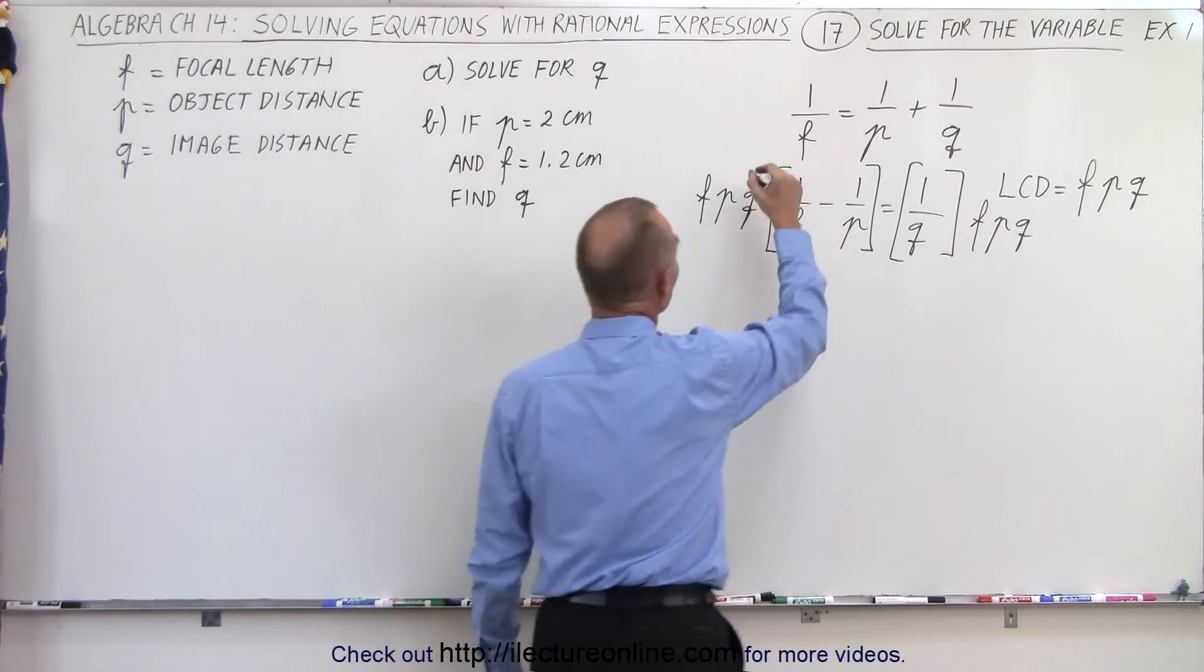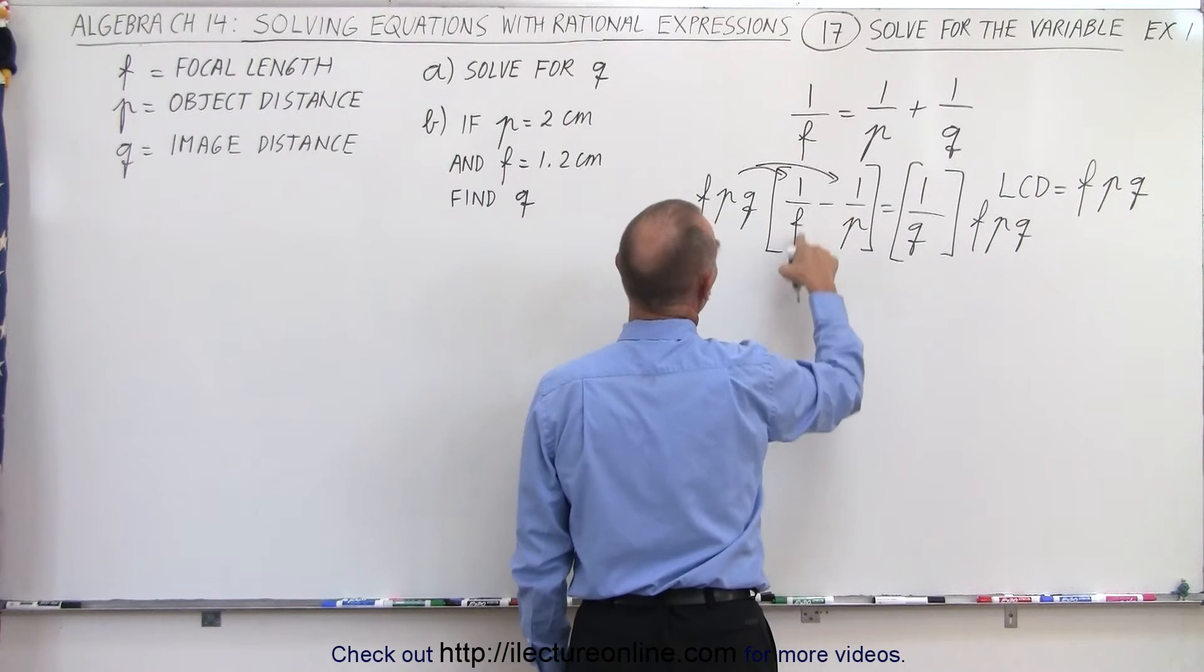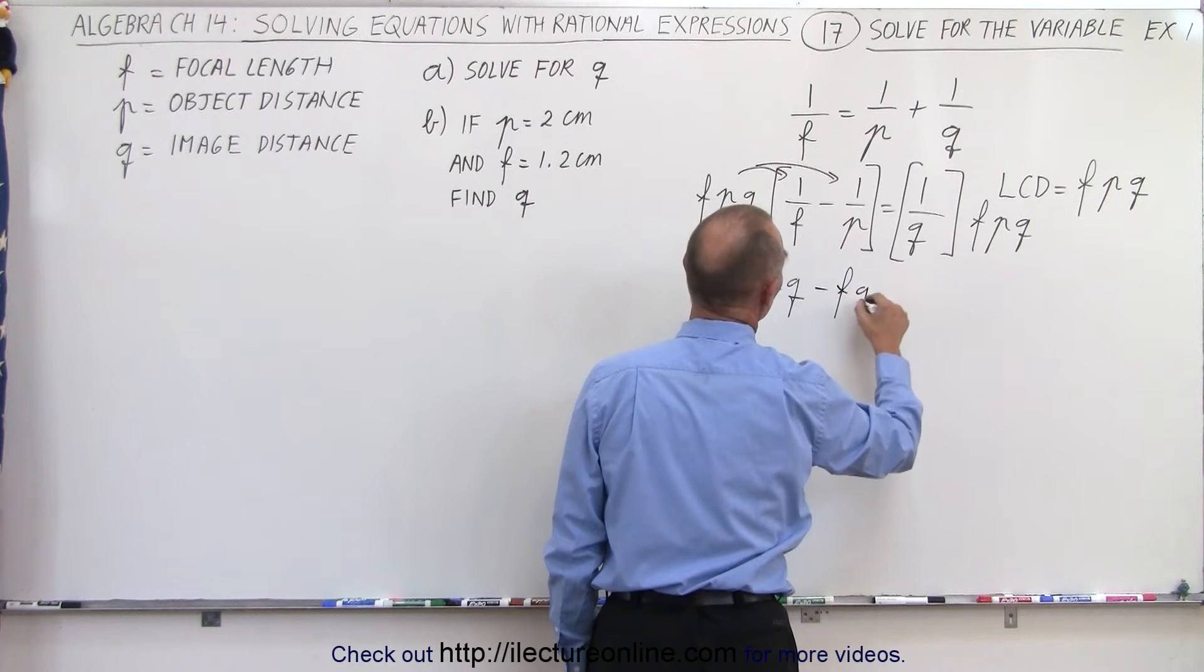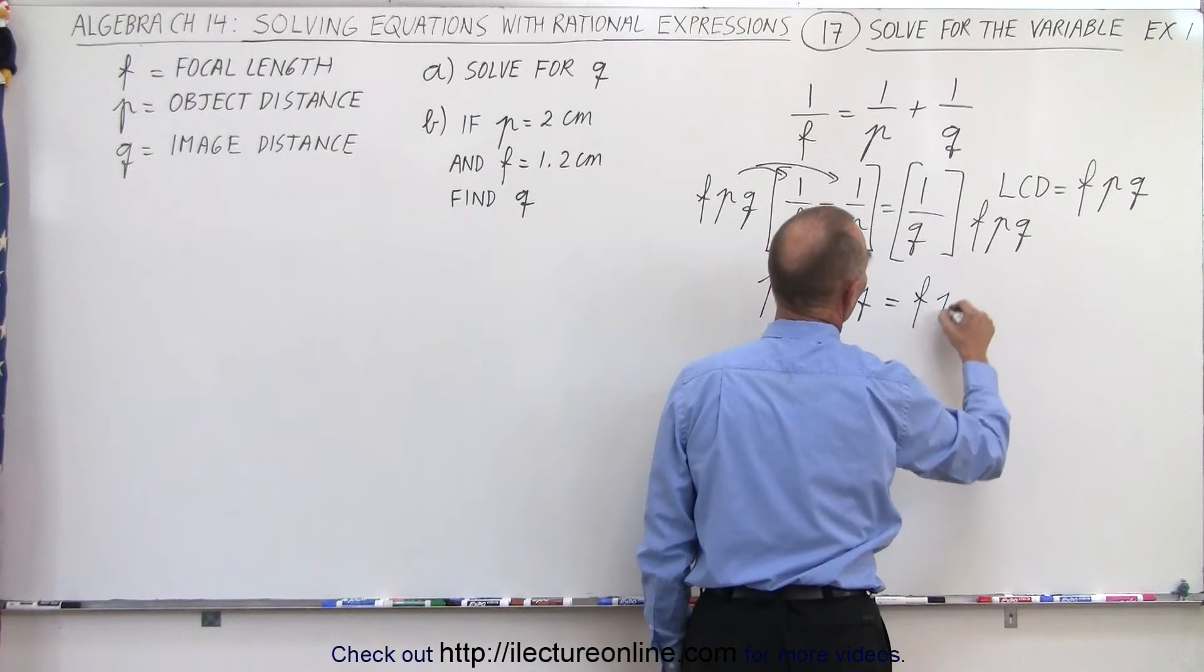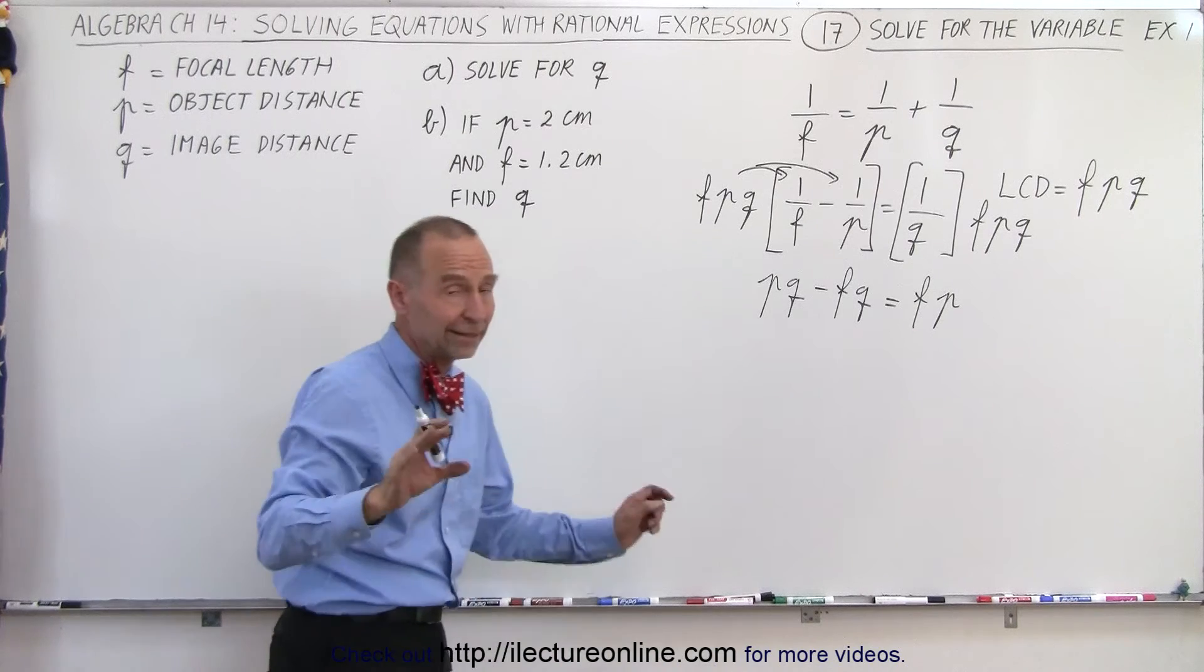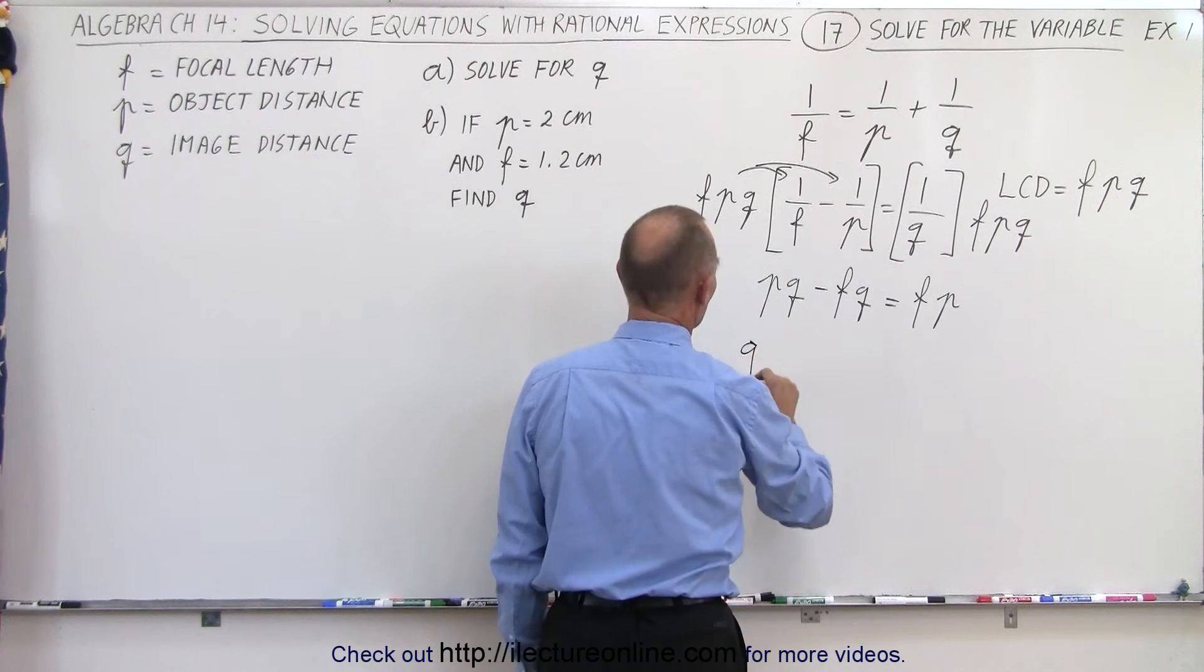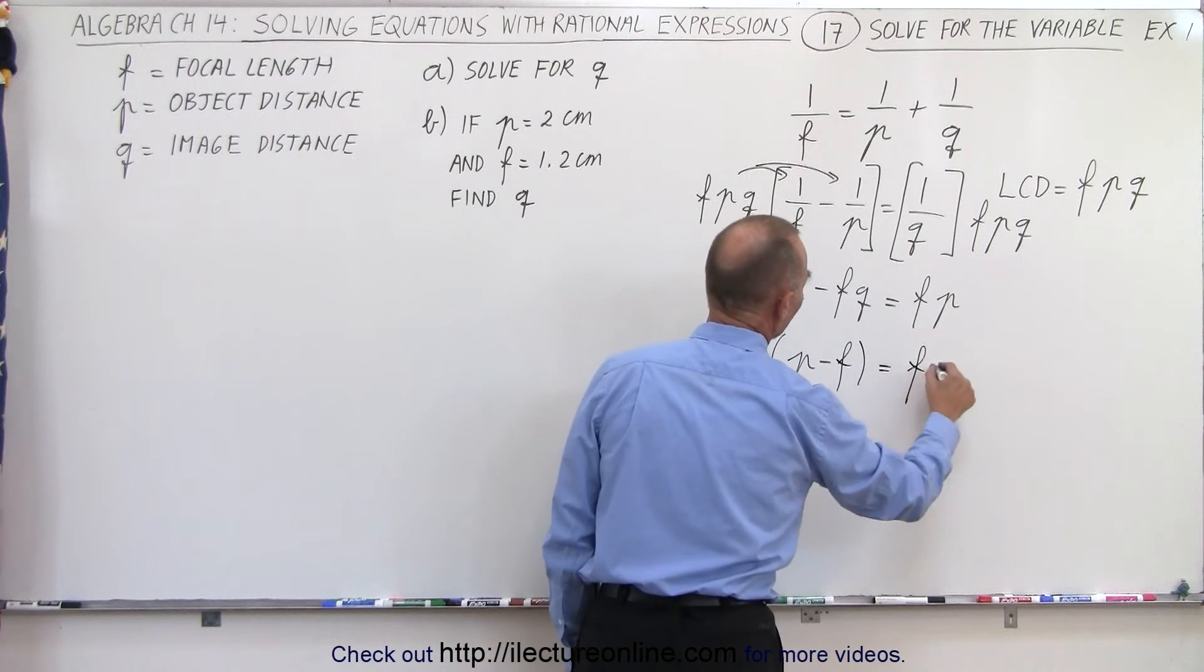So, if we're going to multiply this, let's see what we get. In the first one, the F's cancel out, and we're left with 1 times P times Q. So, P times Q minus the P's cancel out, and we're left with F times Q is equal to here the Q's cancel out, and we're left with F times P. It seems to make no difference. Next, what we should do is factor out a Q here. So, here we have Q times P minus F is equal to F times P.